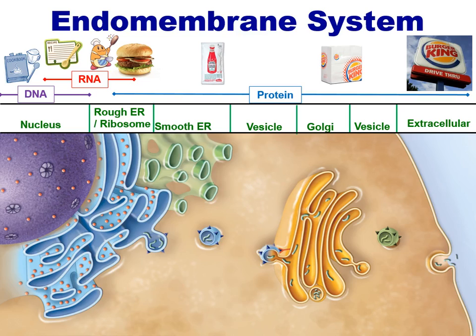One good example of this is how certain neurotransmitters are made and delivered. A neuron will produce a neurotransmitter, or an enzyme, that affects neurotransmitters and their presence in the synapse between neurons. These will be produced in the ER, they'll travel through this endomembrane system, and they'll eventually be released from the cell through exocytosis.